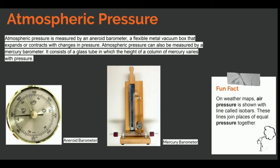Now, atmospheric pressure. An aneroid barometer is used to measure atmospheric pressure. It is a flexible metal vacuum box that expands or contracts with changes in pressure. A mercury barometer can also be used to measure atmospheric pressure. On screen we see images of both an aneroid barometer and a mercury barometer showing the differences between the two.